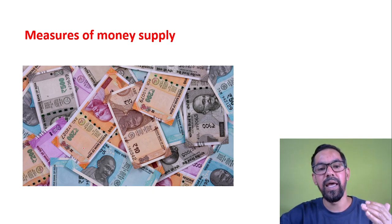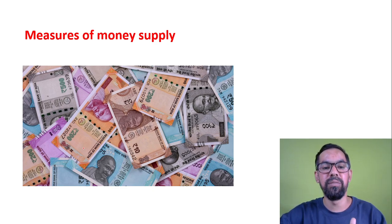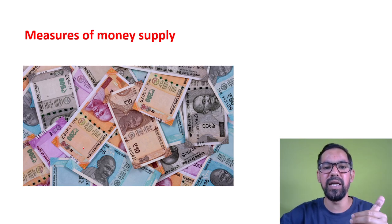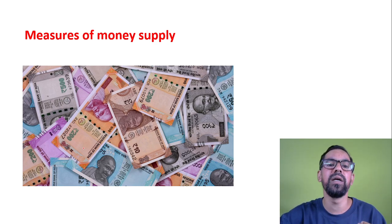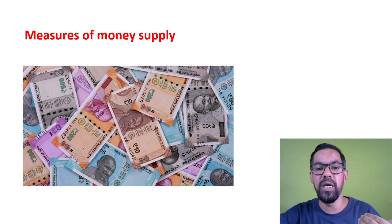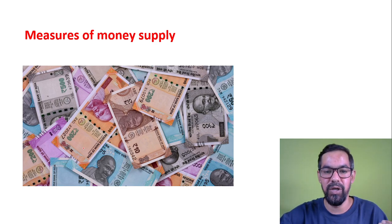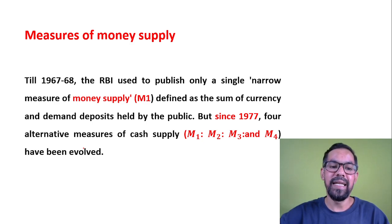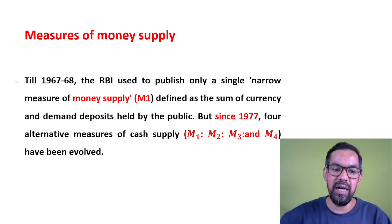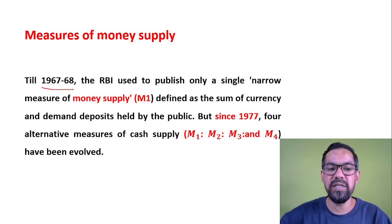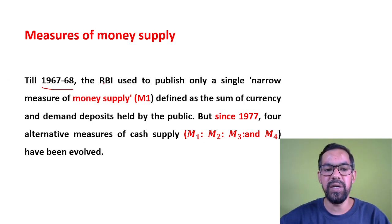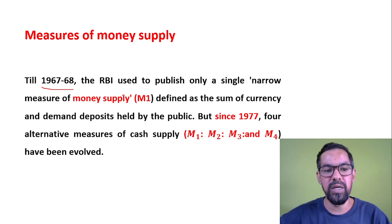We have four measures: M1, M2, M3, and M4. M3 is the most appropriate method for the calculation of money supply in the Indian economy. Till around 1966–68, the RBI used to publish only a single narrow measure of money supply, which was M1.